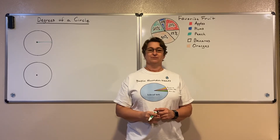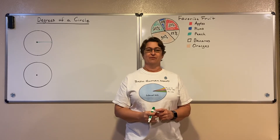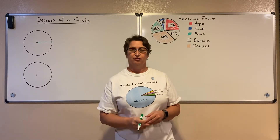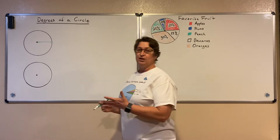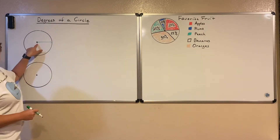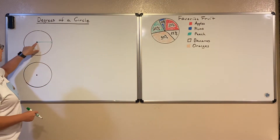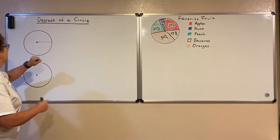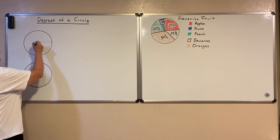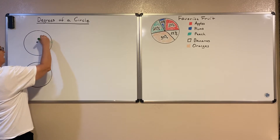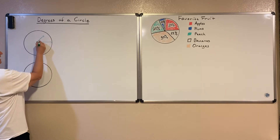Hello, I'm Patti Simpson with Simpson Math. Let's talk about the degrees of a circle. I'm going to look at this circle — here I have the center of the circle, and from the center I've drawn a radius, a line out, and if I draw another line from that I have now created an angle.